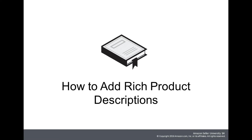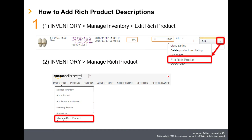In the following, we will explain how to actually create Rich Product Description. There are two ways to access the Rich Product Description creation function. From the top of Seller Central, click Manage Rich Product Description of the Inventory tab, and search for the product you wish to configure Rich Product Description settings. Alternatively, from Inventory Management of the Inventory tab, select the product you wish to configure settings for, and from Edit Details, click Edit Rich Product Description.